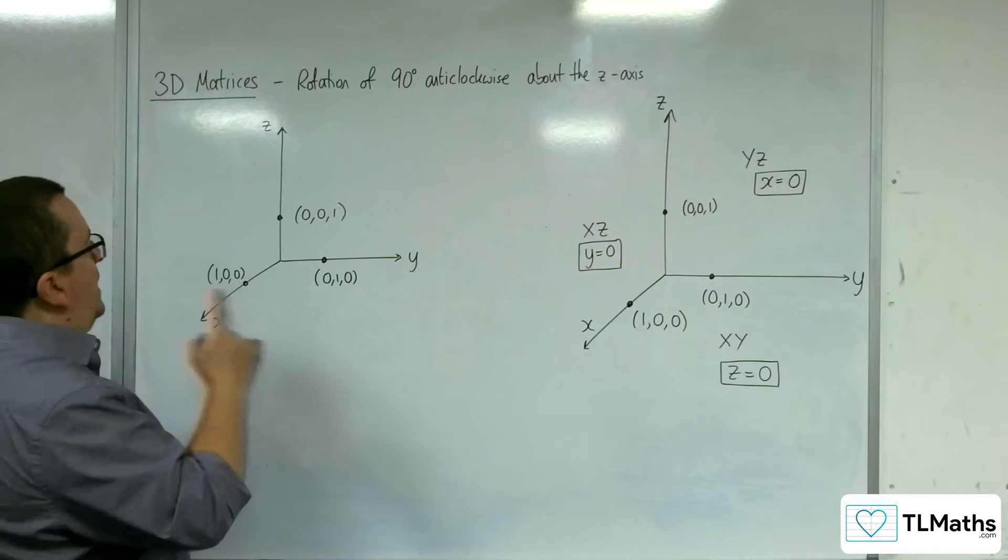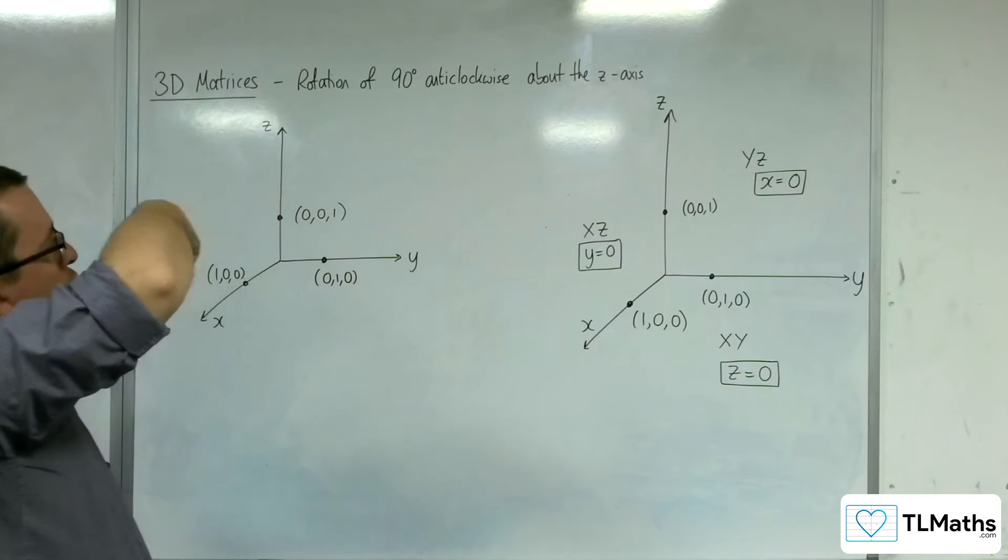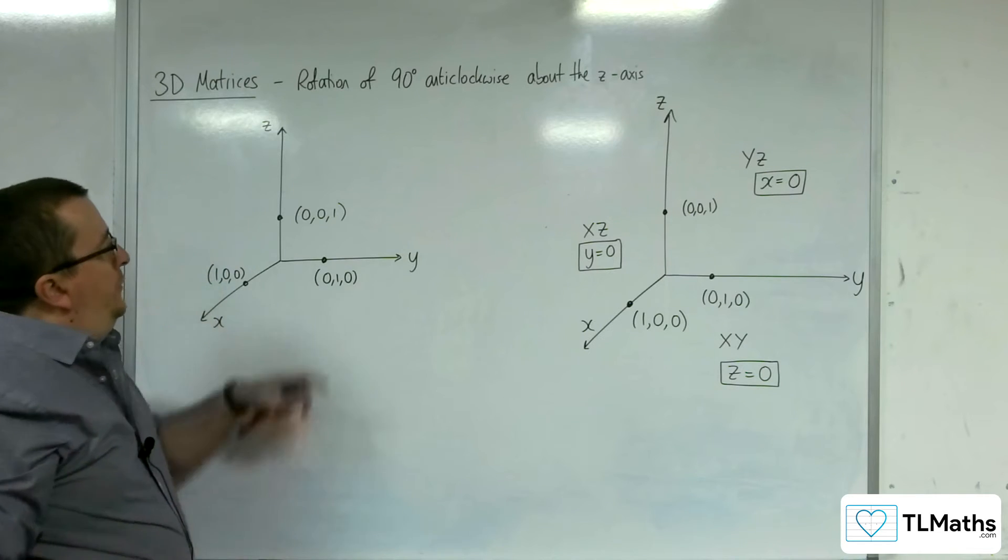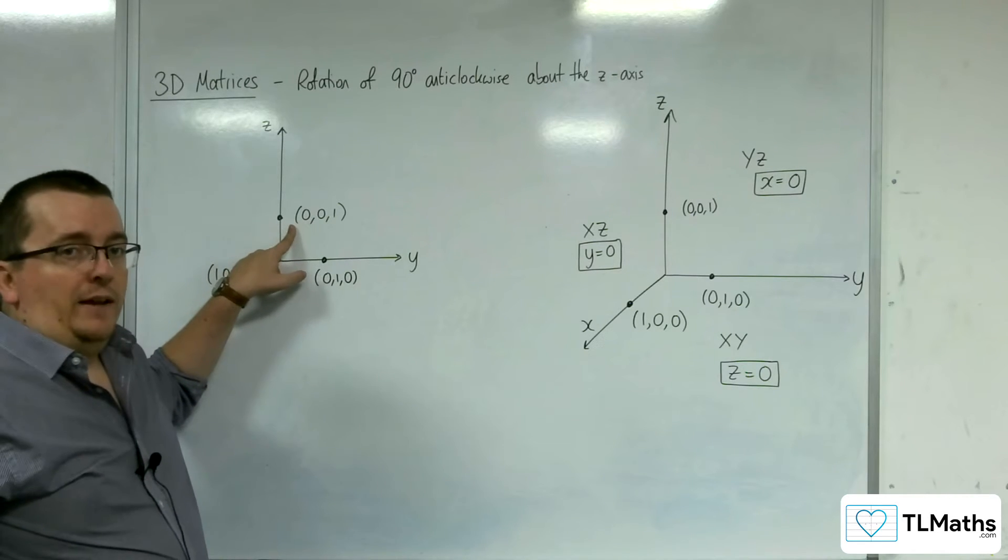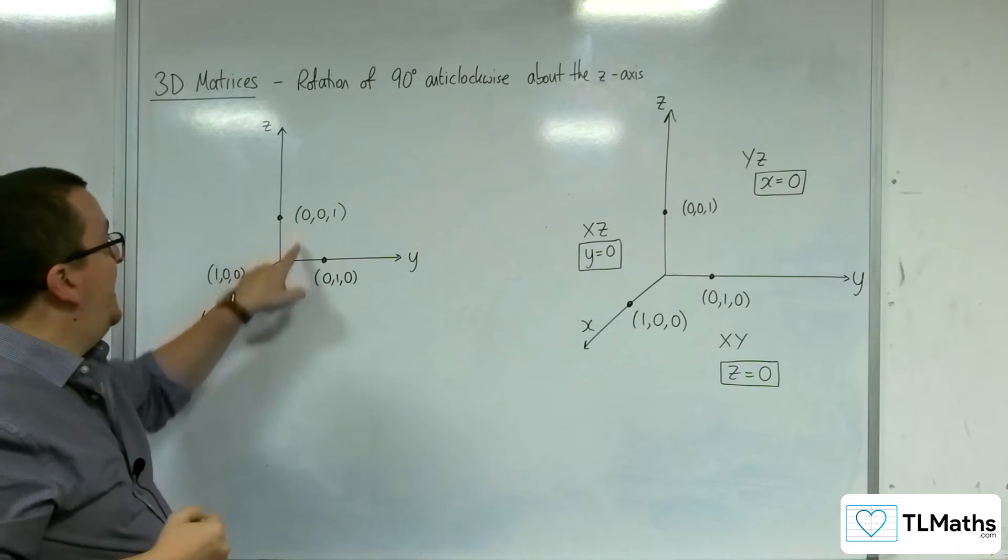What we're going to be doing is we're looking down the z-axis and rotating about that. Any point that is on the z-axis, including 001, will remain fixed, will remain as is.